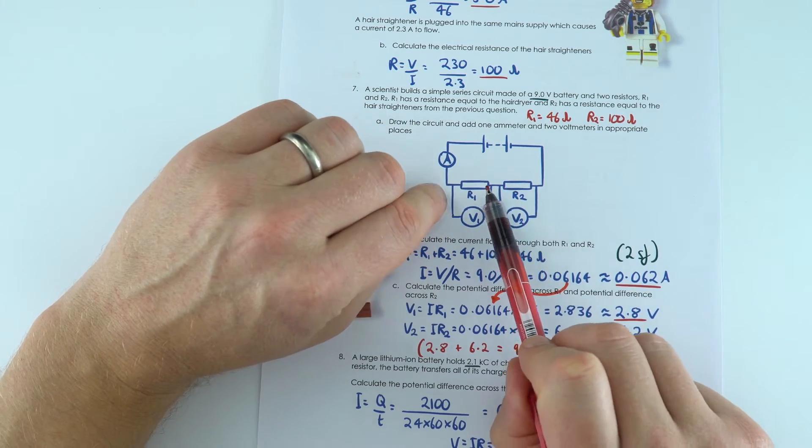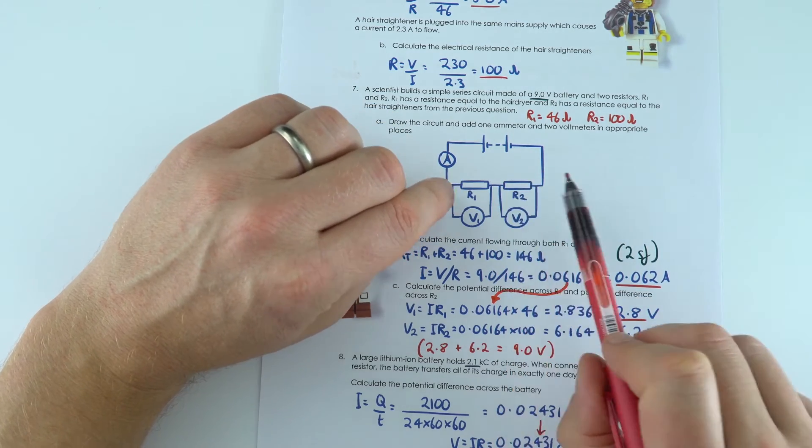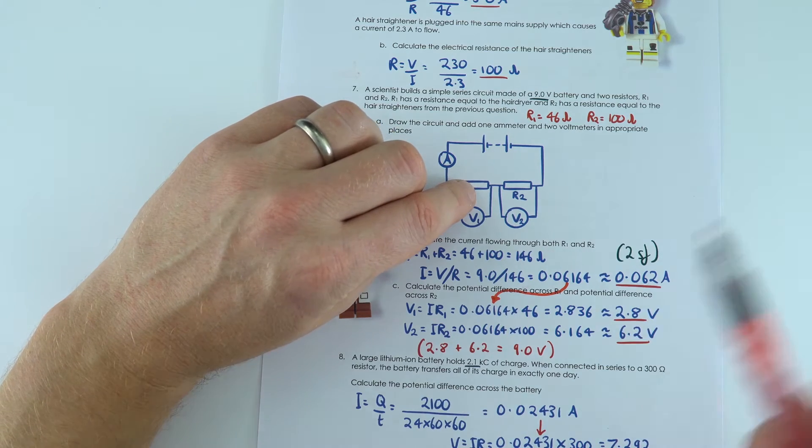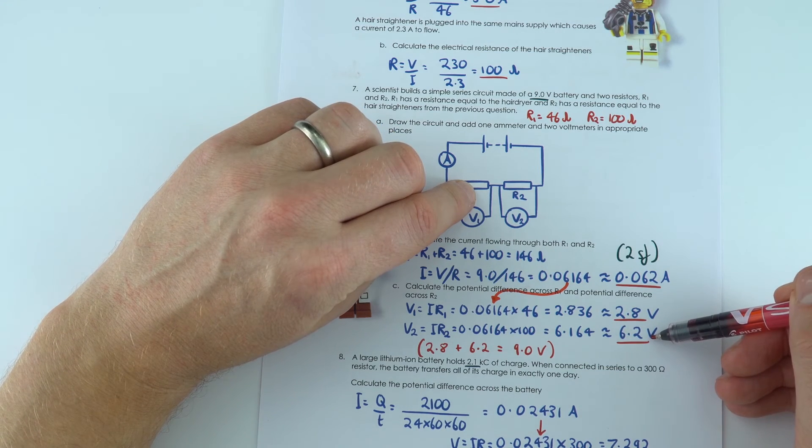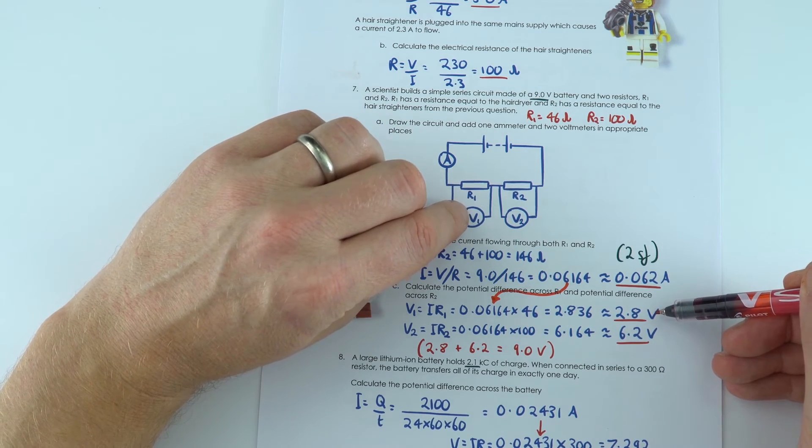So all we've done in this circuit is we split that potential difference, and effectively the resistor with a higher resistance has a greater potential difference across it than the resistor with a lower resistance.